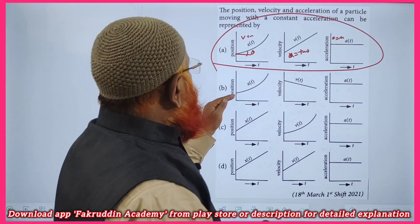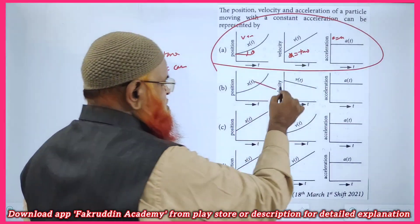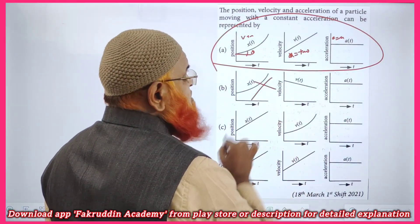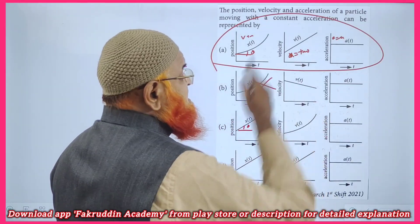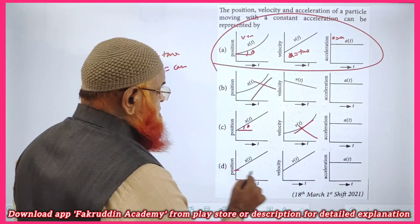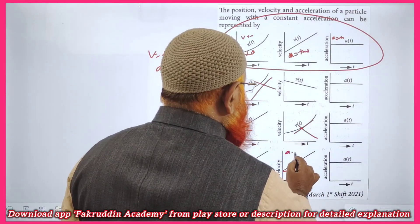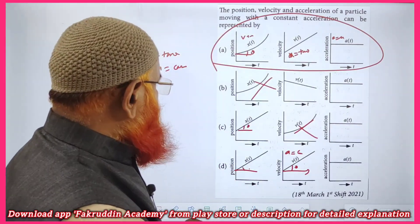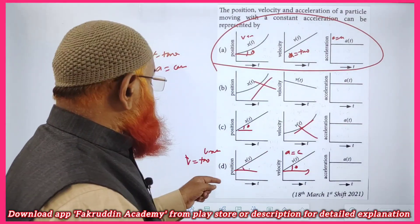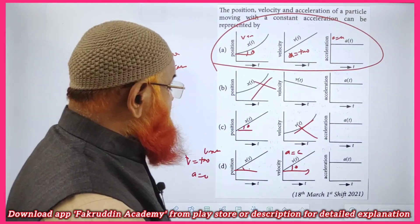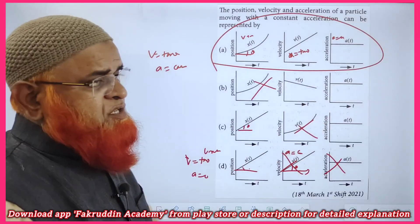Looking at the other options: the first shows velocity decreasing, but the other two graphs show acceleration as constant with velocity increasing — so that does not match. Another option shows uniform velocity in the position-time graph, but the vt graph shows velocity increasing — again no match. For the straight-line position-time graph: theta is constant, velocity is constant, so acceleration is zero. But the paired graphs show constant non-zero acceleration — that also doesn't match. Therefore, only the first three-graph series is the correct answer.